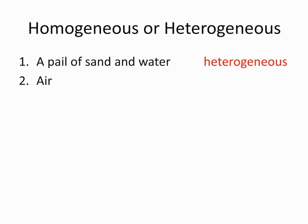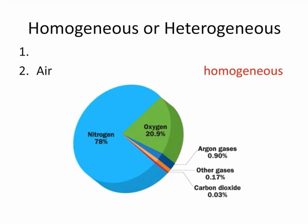Air — homogeneous or heterogeneous? Air is a mixture of mostly nitrogen, around 78%, and oxygen, about 21%, along with some other gases like carbon dioxide and argon. Molecules like nitrogen and oxygen, and atoms like argon, cannot be seen even with most microscopes. The particles spread out evenly so that every breath taken has the same amount of oxygen and nitrogen. Air would be a homogeneous mixture — it also could be called a solution.